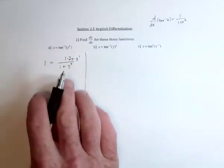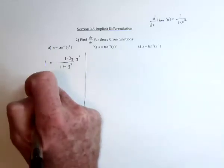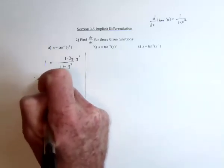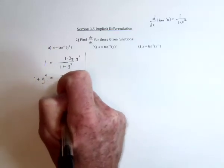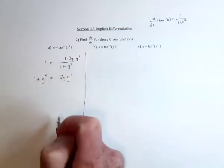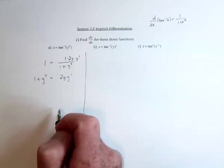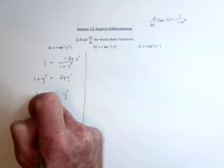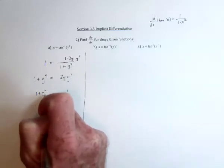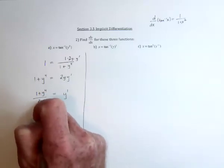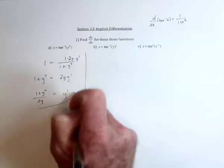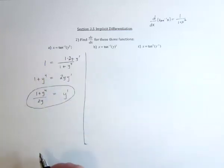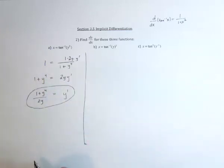Now we need to solve for y prime, so take this 1 plus y to the fourth and multiply it onto the other side. And then finally divide both sides by 2y and y prime is equal to 1 plus y to the fourth divided by 2y. So it turns out that y prime is a function of y instead of x.